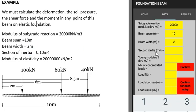Section of inertia 0.1 meter to the power of 4. Young modulus E or modulus of elasticity is equal to 20,000,000 kN per meter squared.